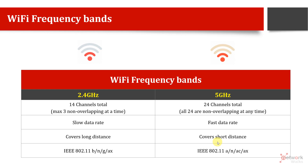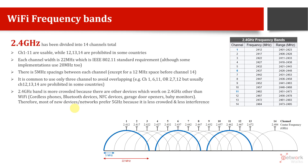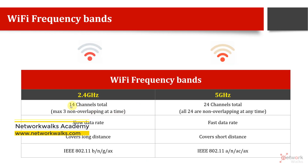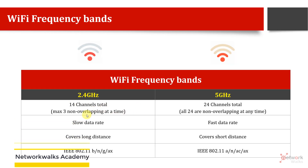The 2.4 GHz band gives us a total of 14 channels — I'll explain these in detail in the next video. We have channels 1 through 14, each with a different frequency and covering 20 to 22 MHz of bandwidth.